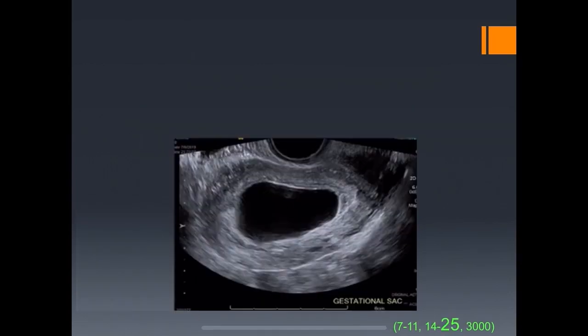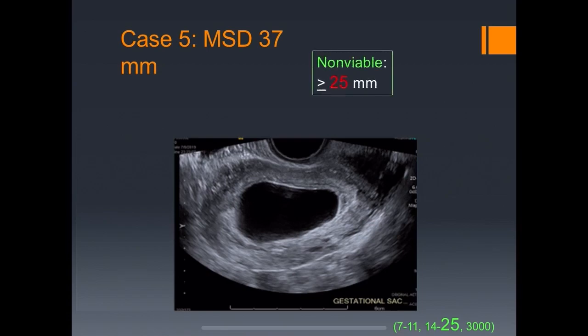Case five: mean sac diameter of 37 millimeters. This takes us to the fourth important number. Non-viability is defined as an intrauterine gestational sac with a mean sac diameter greater than 25mm or greater without a fetal pole.